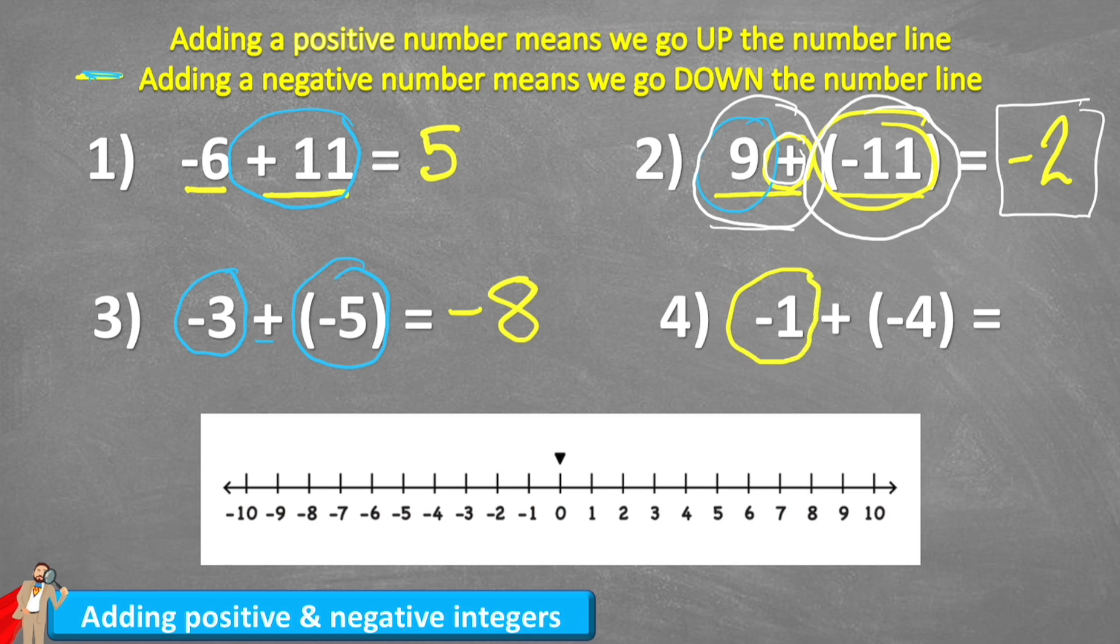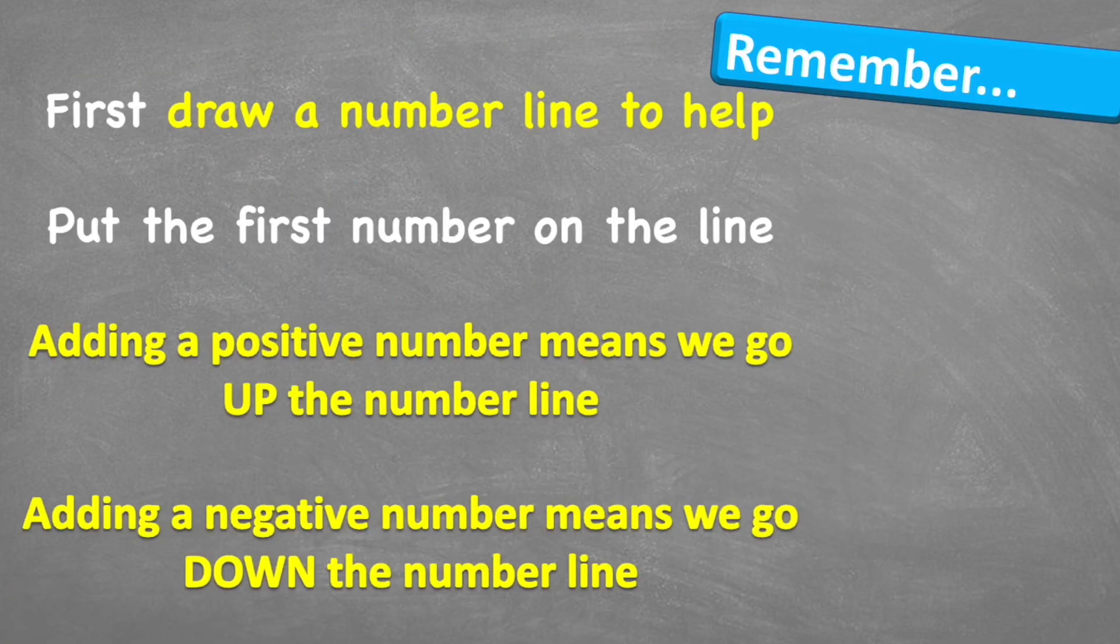This one I'm starting with negative one and I'm adding a negative four. So negative one, circle it on my number line and then I add another debt, another owe. So I'm going one, two, three, four and I land on negative five. And there we go.